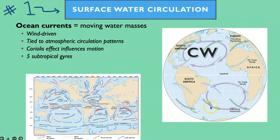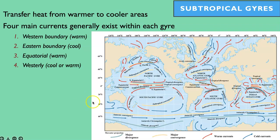In the southern hemisphere, because of the winds, we wind up with counterclockwise gyres of water. There are five major subtropical gyres on Earth. We have the North Atlantic gyre and the South Atlantic gyre, a North Pacific gyre, a South Pacific gyre, and the Indian Ocean gyre. Since there's no ocean north of the equator in that region, we only have one. So these are the five main gyres.